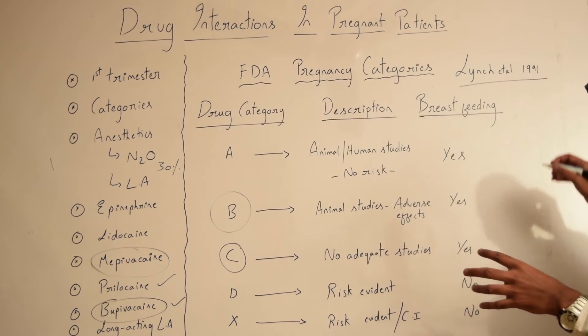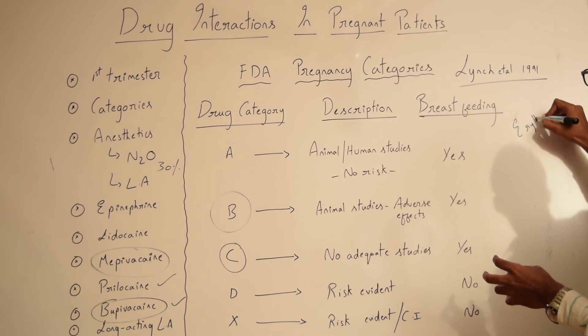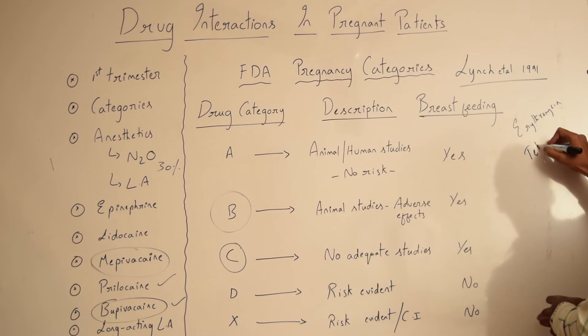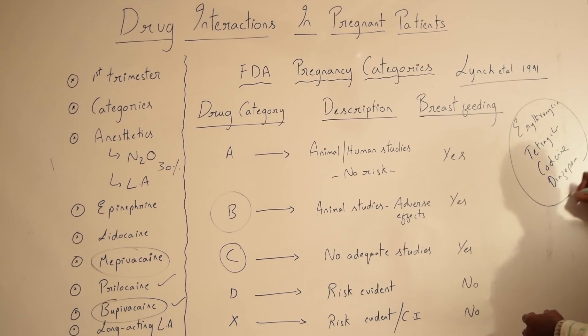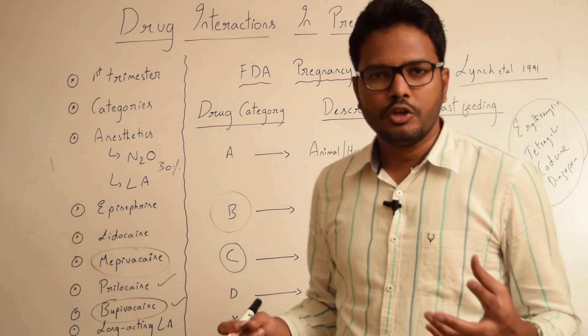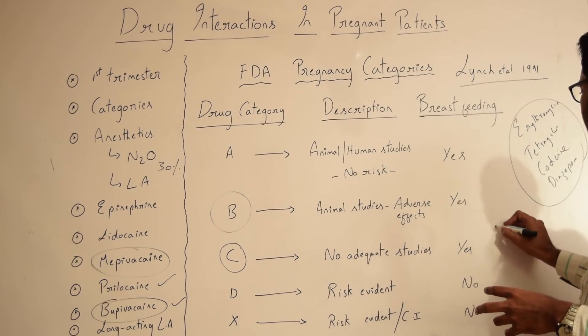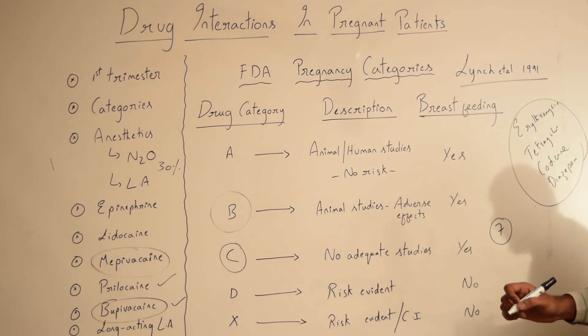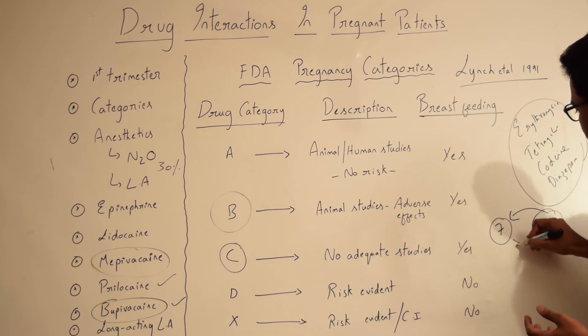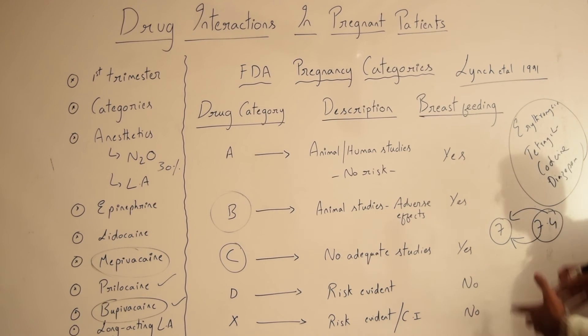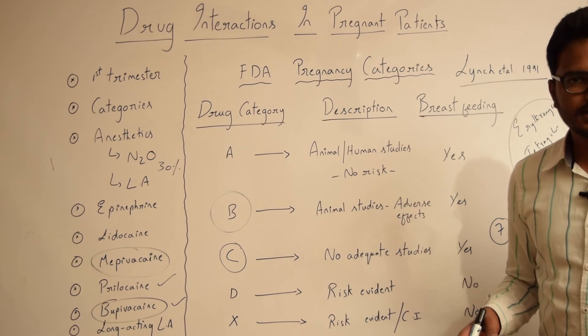And apart from this, there are few more important points to be discussed. Certain drugs which are weak bases such as erythromycin, tetracycline, codeine, diazepam, these drugs should be avoided in breastfeeding mothers because the pH of milk, human milk is around 7. Whereas, the pH of serum or the blood is around 7.4. So, what happens is when a breastfeeding mother takes up these drugs, these drugs will enter from the systemic circulation, diffuse passively in greater concentrations into human milk. The concentration of these weak bases increases in human milk. Hence, these weak bases should be avoided.